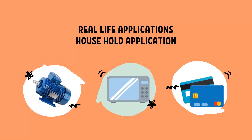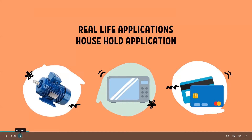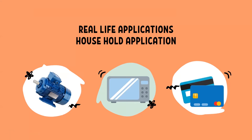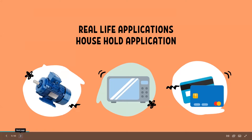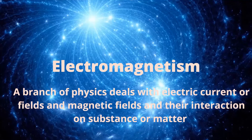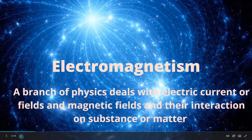We also have magnetic strips in our cards. These are some real-time examples where we use the concept of electricity and magnetism in daily life. Electromagnetism is a branch of physical science that describes the interactions of electricity and magnetism. We have the electric current, electric field, and magnetic field, and their interactions constitute the concept of electromagnetism in any substance.